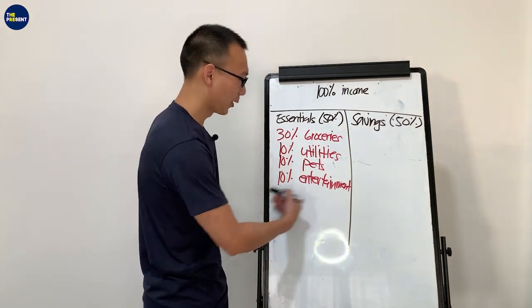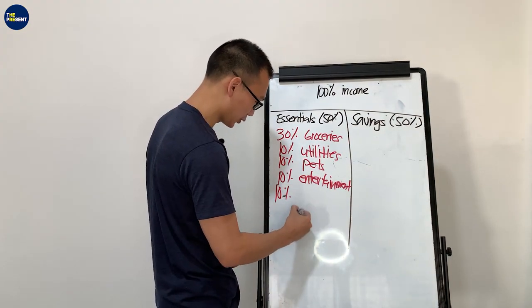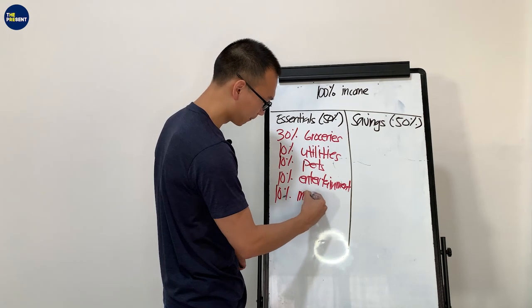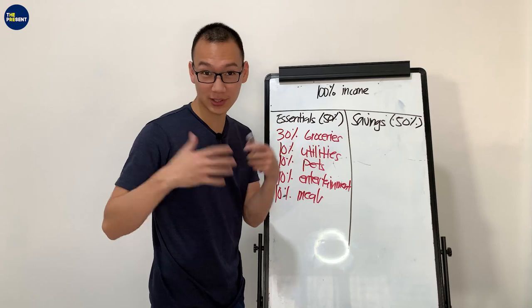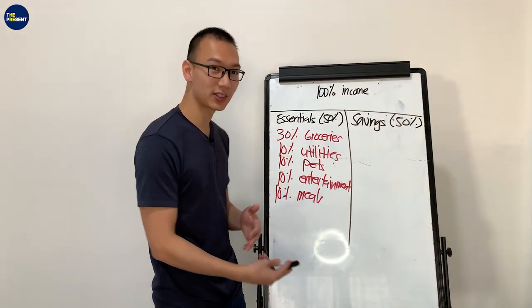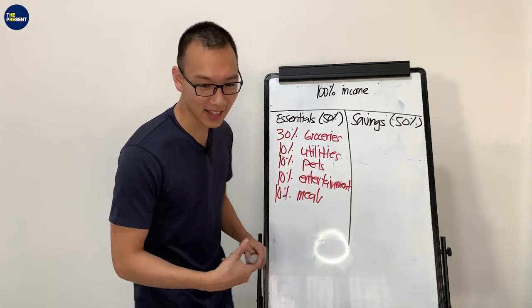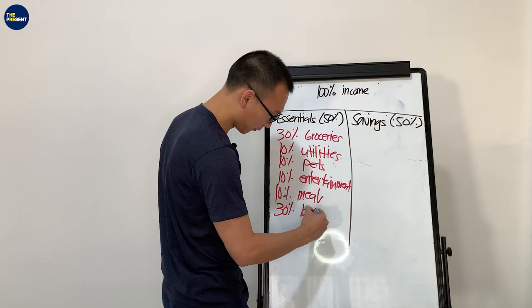And then 10% of that goes to meals. What I'm referring to when I say meals is our restaurant experience, when we go to restaurants and we order food and things like that. And lastly, 30% goes to our buffer.